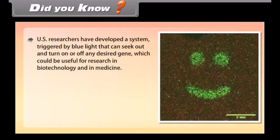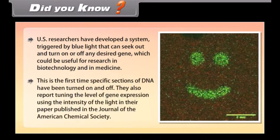Did you know? US researchers have developed a system triggered by blue light that can seek out and turn on or off any desired gene, which could be useful for research in biotechnology and medicine. This is the first time specific sections of DNA have been turned on and off. They also report tuning the level of gene expression using the intensity of the light, published in the Journal of the American Chemical Society.